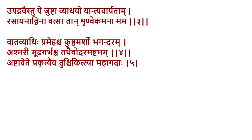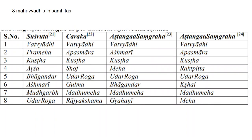That doesn't mean every patient having these diseases needs to go for palliative treatment, but the chances of reaching such a situation are quite high. When treating diseases with poor prognosis and complicated treatment, there is always a possibility you may need to shift to a palliative approach. According to Sushruta, eight conditions are considered Mahadharaha: Vatavyadhi, Prameha, Kushta, Arshas, Bhagandara, Ashmari, Mudhagarba, and Udara — they are by nature Durshikitsa, or difficult to treat.